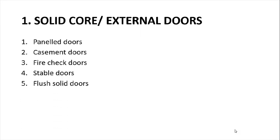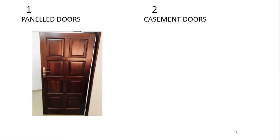Let's focus now on solid core or external doors. We have five different types: panelled doors, casement doors, fire check doors, stable doors, and flush solid doors. The first is the panelled door — there is an example of a panel door showing an eight-panelled door made out of hardwood; it is very strong.